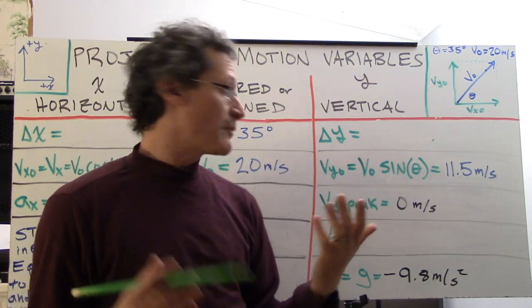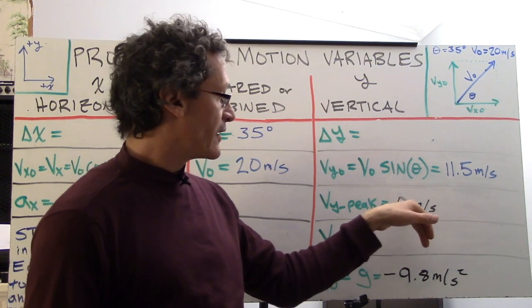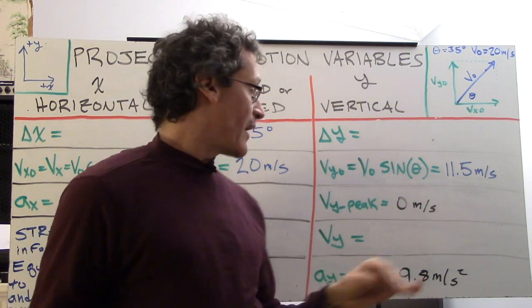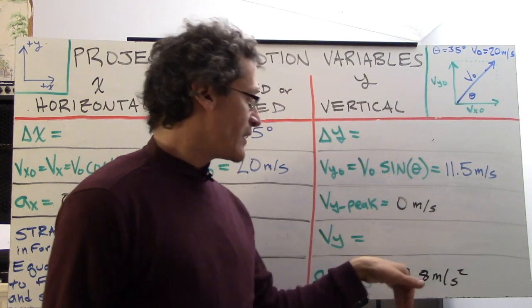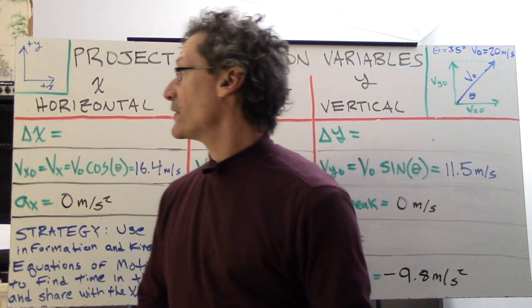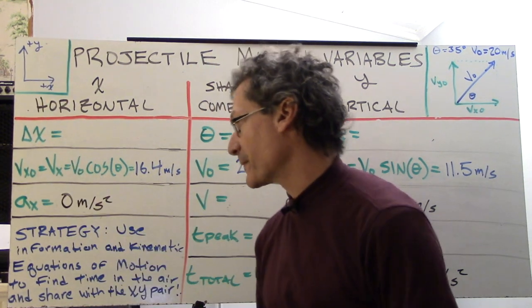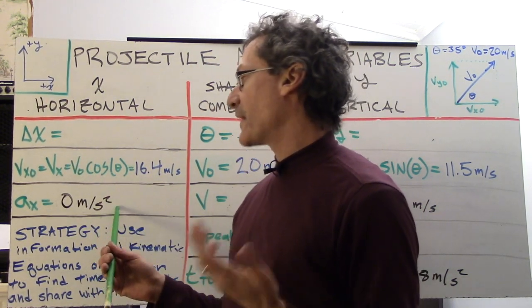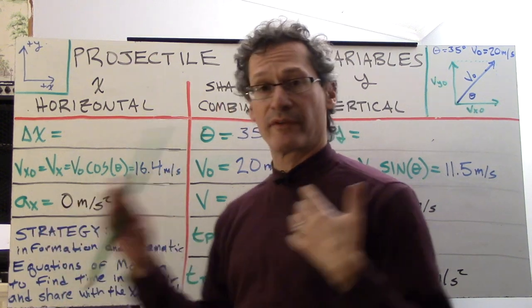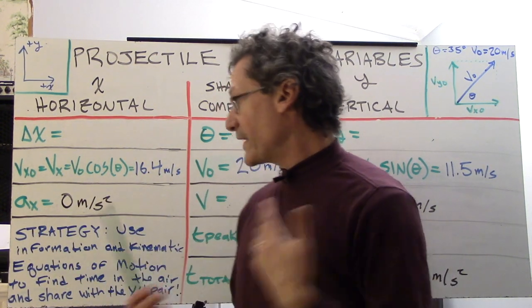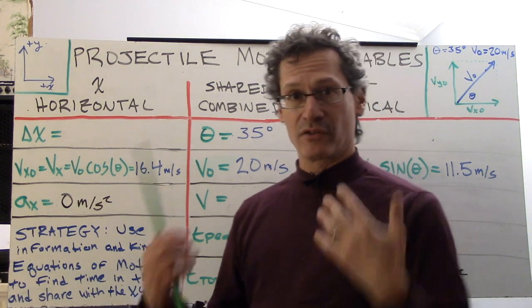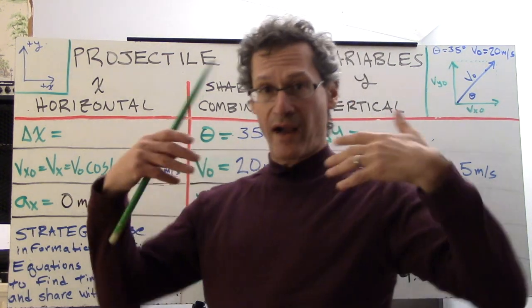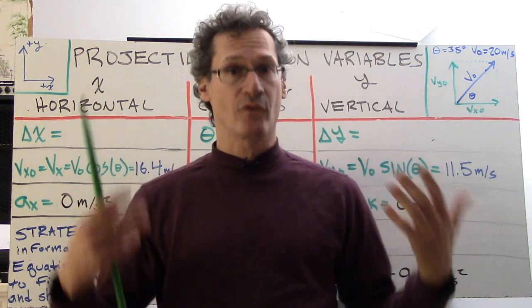If you set your calculator to degrees, very important, vy-naught is v-naught times the sine of the angle, 11.5 meters per second. In black, just like before, we have the known quantities even before starting the problem: vy-peak is zero meters per second. ay, which is g, is negative 9.8 meters per second squared, thanks to our coordinate system, and ax is zero meters per second squared. So let's go do this, and our strategy is going to be similar. We're going to find time to be able to figure out, first, the height of the golf ball in the air.